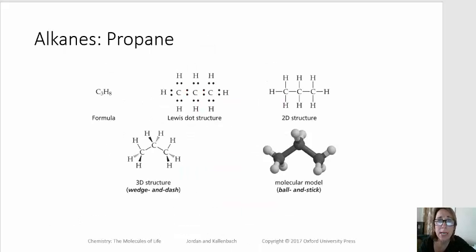So when we draw wedge and dash structures of alkanes, we always want to keep in mind that the staggered conformation is going to be the most stable, meaning that the carbon-hydrogen bonds want to be as far apart from one another when the carbons are adjacent to one another.